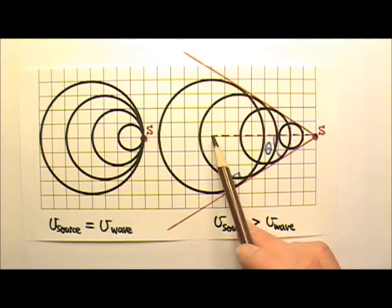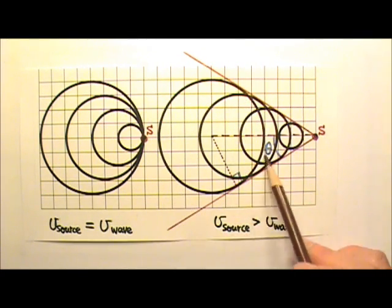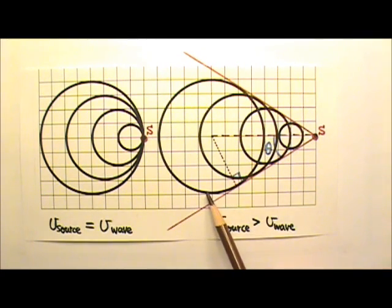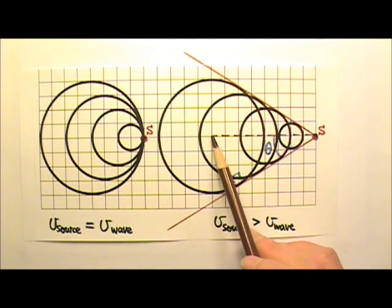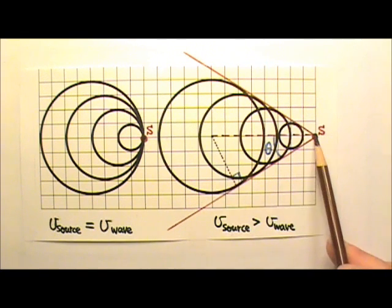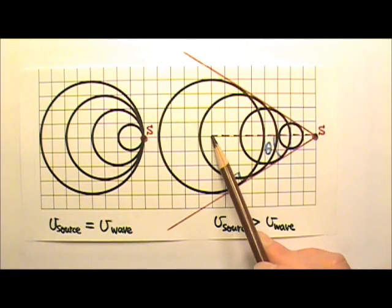This point is the center of this circular wave front, which means that back when this wave was produced, the wave source was here. And now the wave source has traveled from here to there, and the wave has traveled from here to here. Which means in the same amount of time...